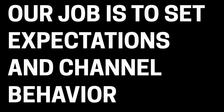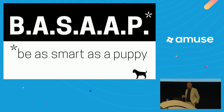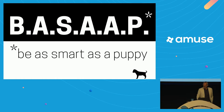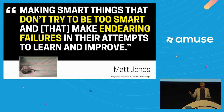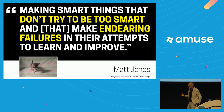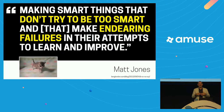One technique: be as smart as a puppy. This is a quote from Matt Jones of the late great digital agency Berg London — now at Google. His goal: making smart things that don't try to be too smart, and that make endearing failures in their attempts to learn and improve. That doesn't mean your business-critical application has to be cute and adorable, but it does have to set expectations of just how smart it is — and signal when it's right or wrong.